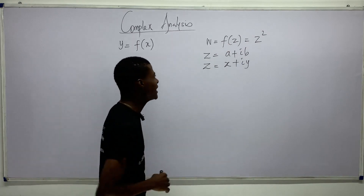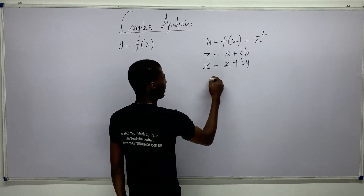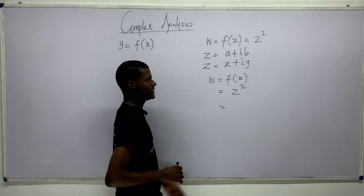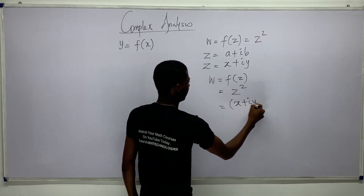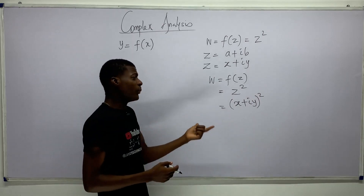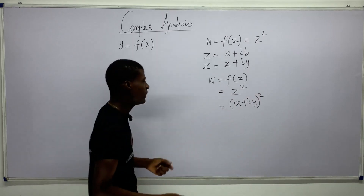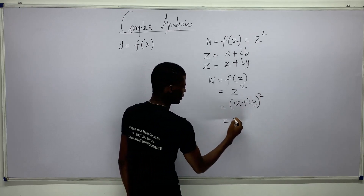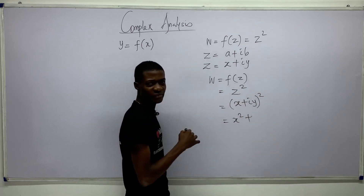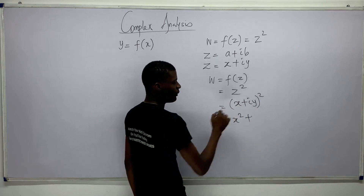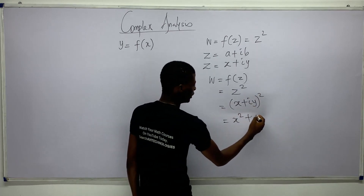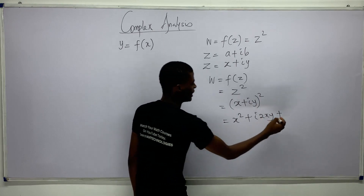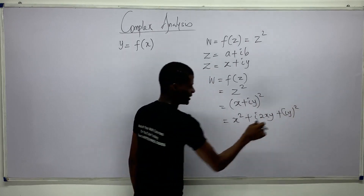So we have w equals f(z) equals z squared. Our z is x plus iy, so we square that. Expanding: x squared, plus x times iy times 2 which gives 2ixy, plus (iy) squared.